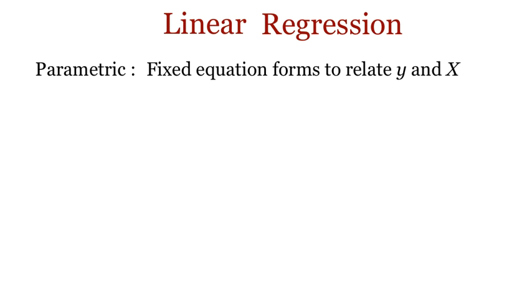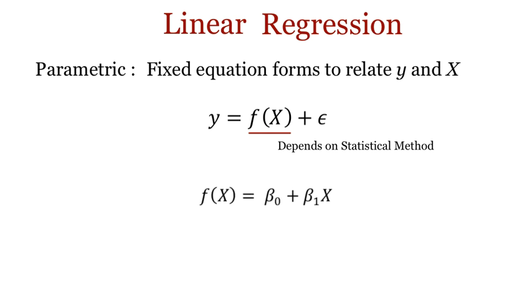Parametric regression models take the general form y equals f of x plus epsilon, where y is the predicted output variable, f of x is an unknown function, and epsilon is the error term that is independent of the covariates x. Different regression models use different forms of the function f. In linear regression with one covariate x, it takes the form beta 0 plus beta 1 x.